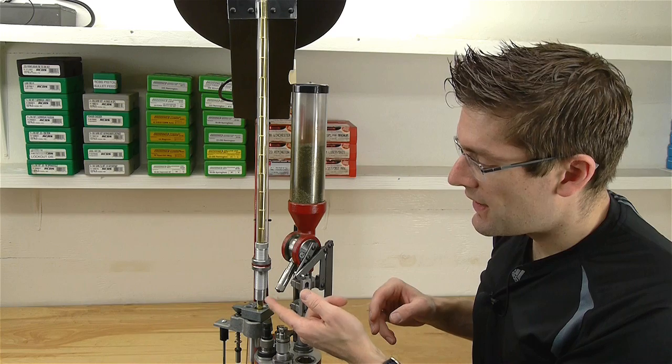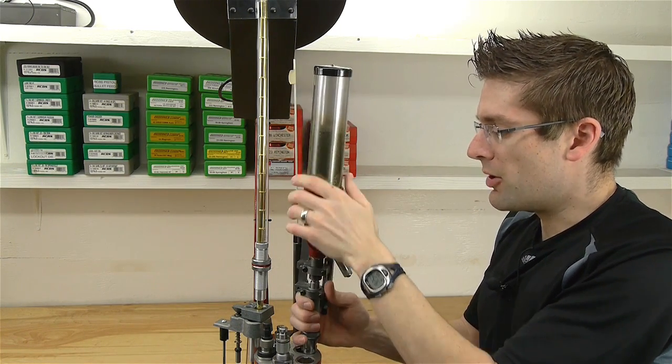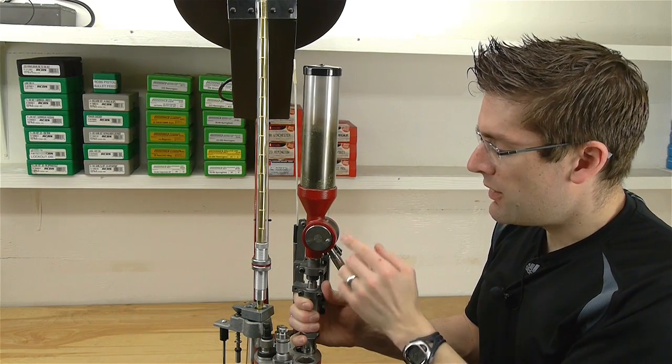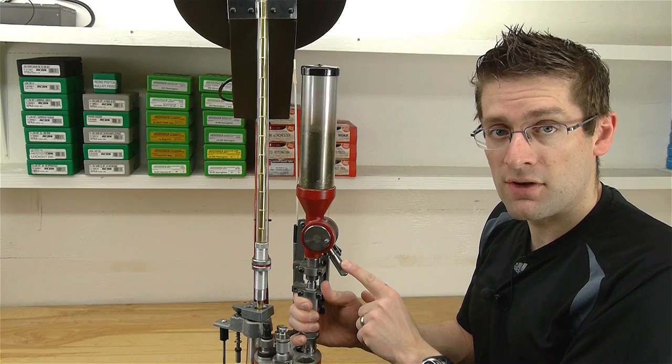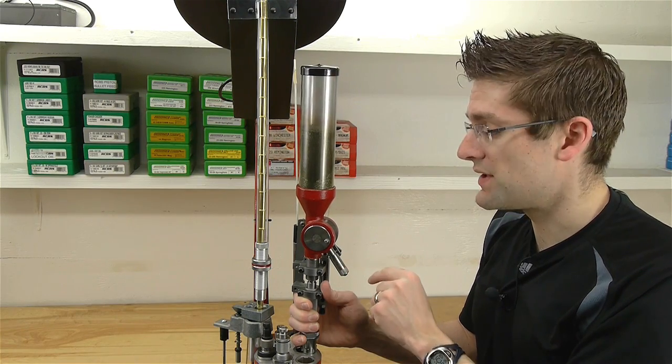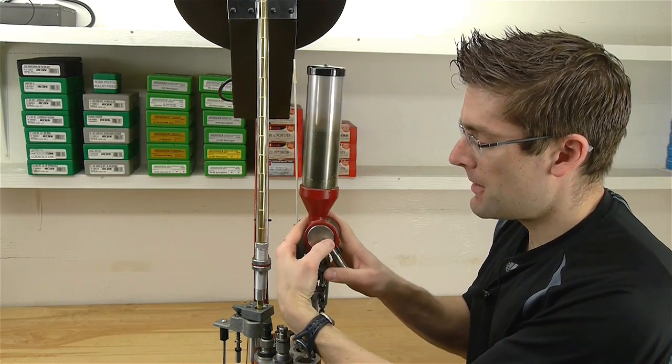We also have the lock and load metering insert system. So we can very quickly remove the powder measure from the press. And when we want to change metering inserts, you can keep multiple metering inserts set for your favorite loads. We can just push this button over here.